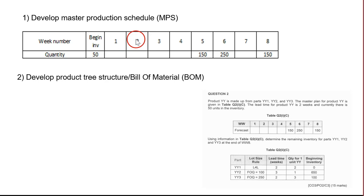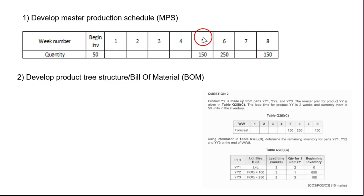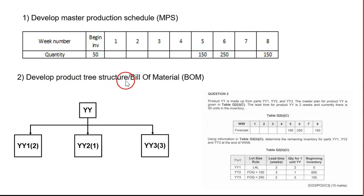Put the weeks one through eight, and the beginning inventory is 50 units. The forecast quantities are: 150 for week five, 250 for week six, and 150 for week eight.